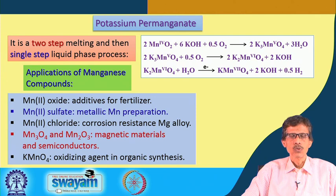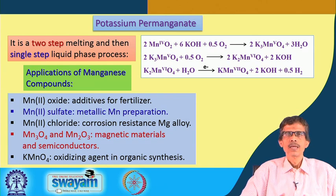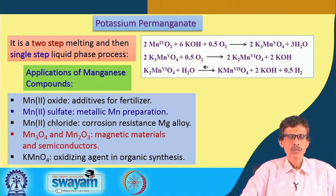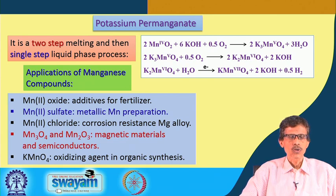Then MnCl2, the manganese chloride, which we mostly use in teaching classes, the teaching laboratory, research laboratories, and R&D laboratories. But it is also important industrially for metallurgical engineering — manganese is very useful where we have magnesium-based alloys, and for corrosion-resistant magnesium-based alloys, some amount of manganese can be added during production.